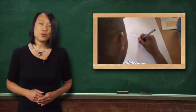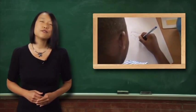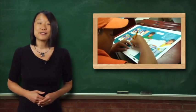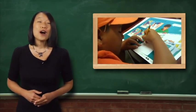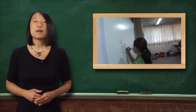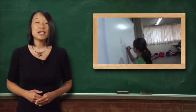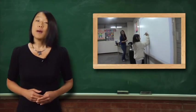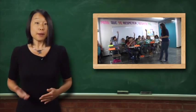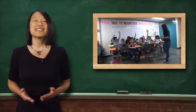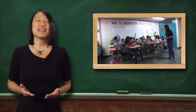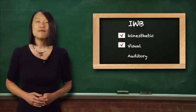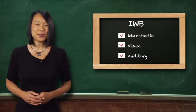Kids are visual and love to draw and use an interactive whiteboard. Watch how engaged learners are playing Pictionary to check comprehension of vocabulary. By combining movement, pictures, and sounds, the IWB appeals to kinesthetic, visual, and auditory learners.